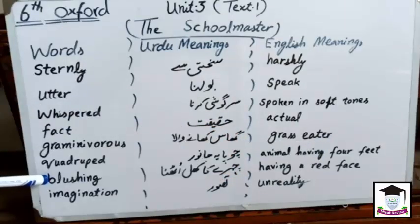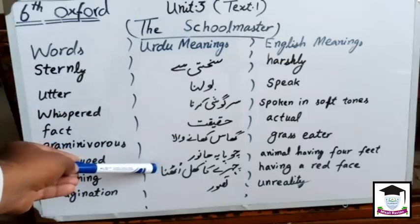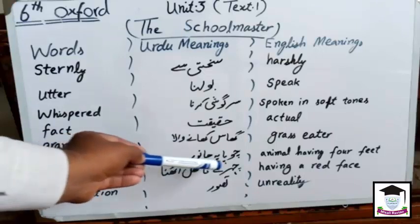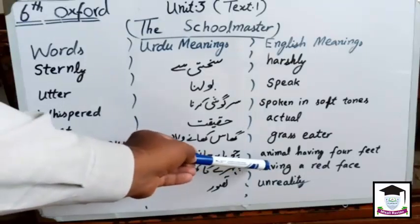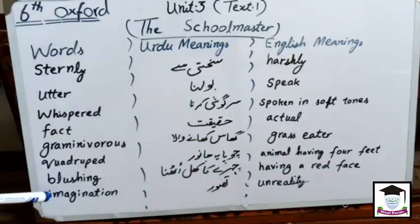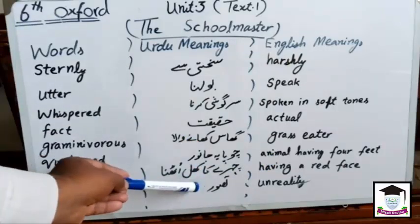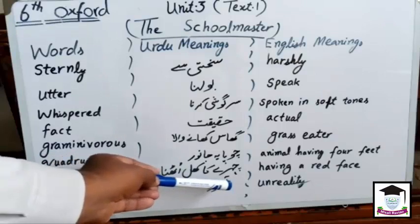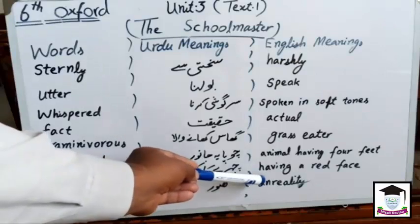Next word is blushing. Urdu meaning: chehre ka khil utna. English meaning: having a red face. Next word is imagination. Urdu meaning: tasawar. English meaning: unreality.